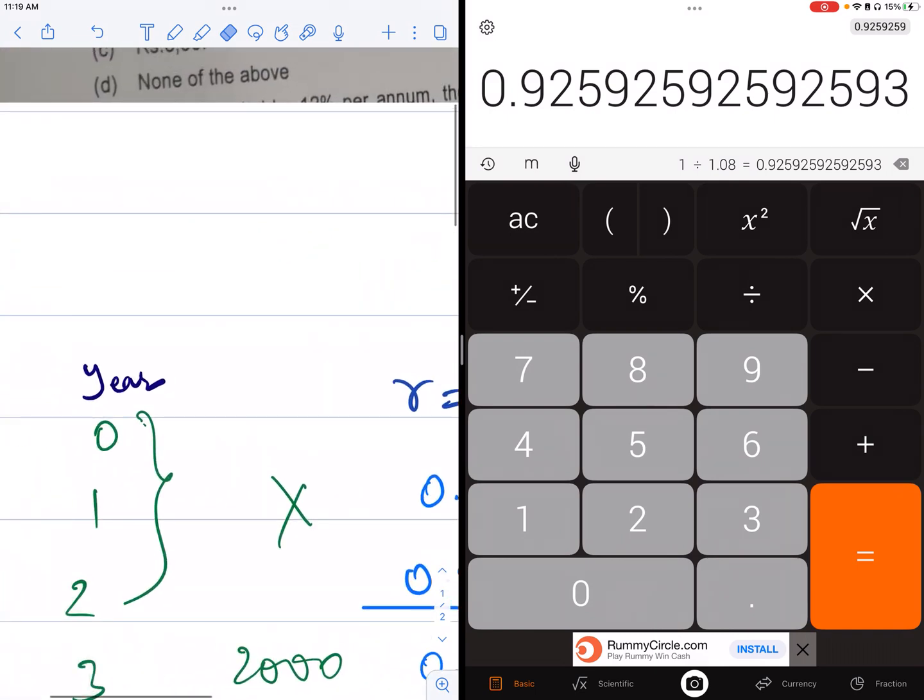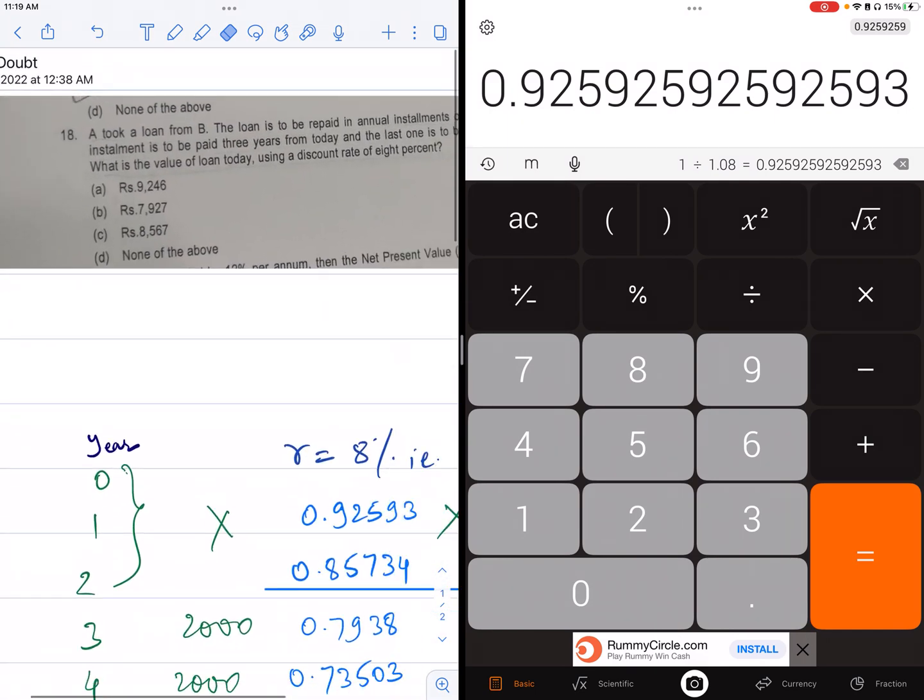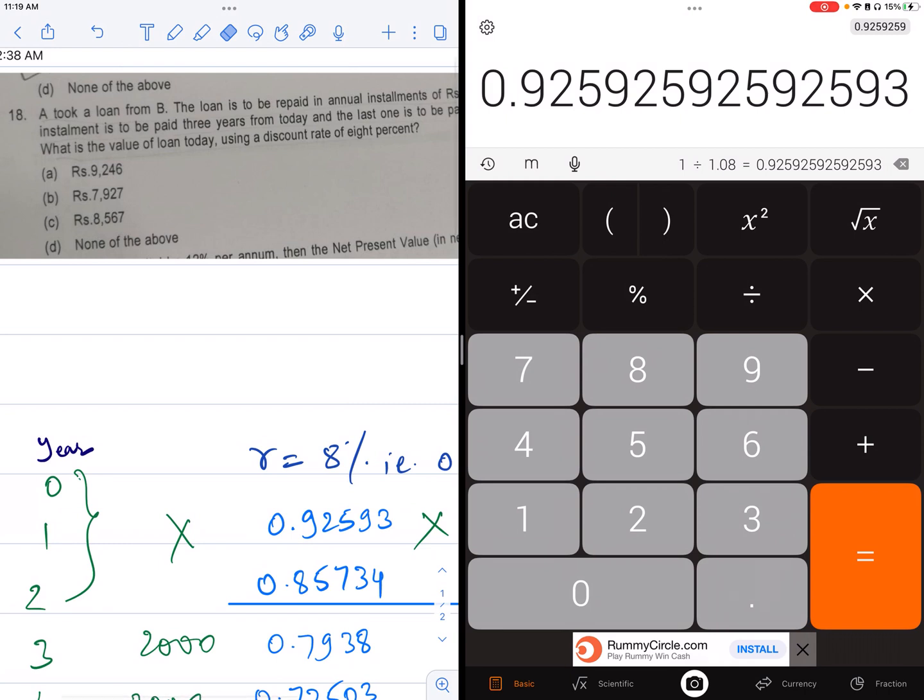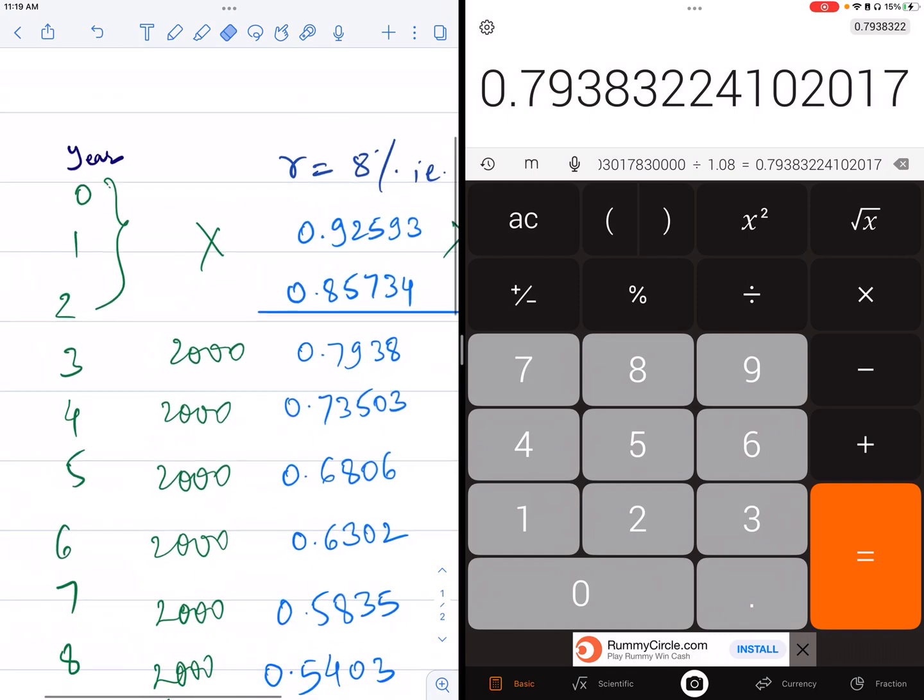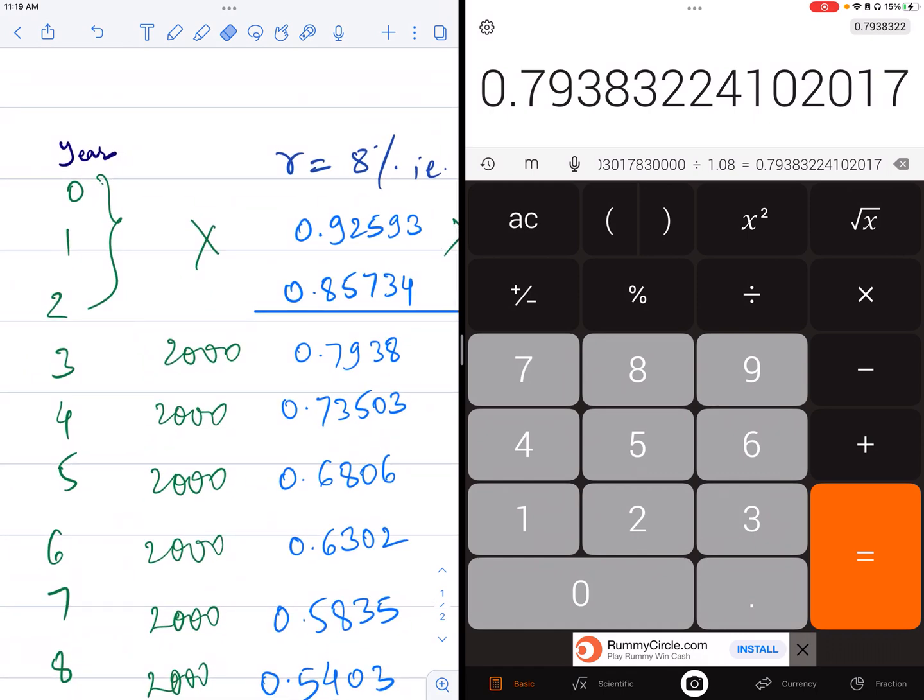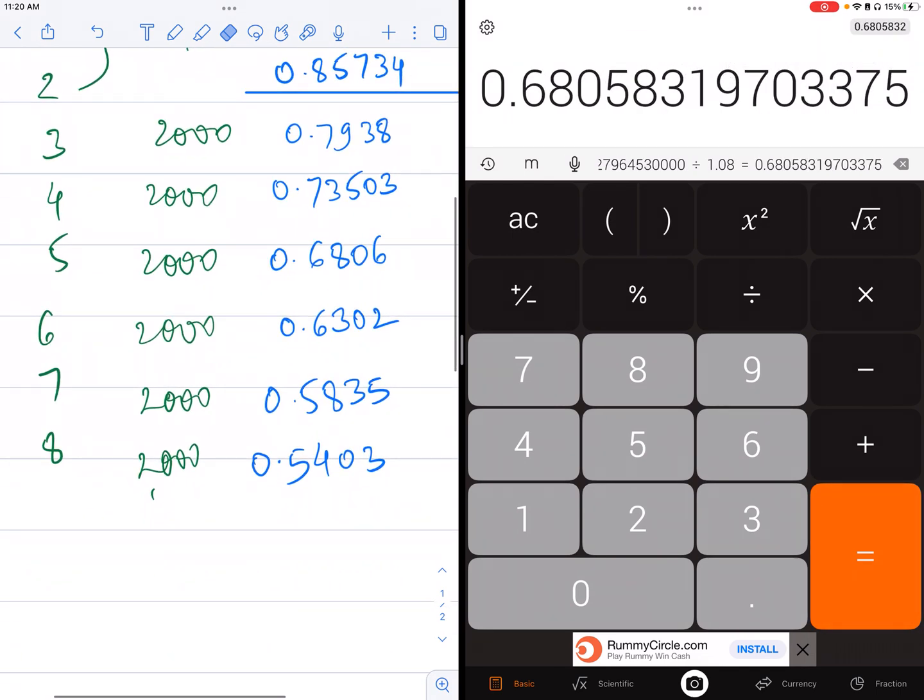If I discount it at the end of year number one, one divided by 1.08 at the end of year number one is 0.92593 something. If we square it, it becomes 0.8573 something. So you keep squaring and you will get the discounting rate or factor at the end of each year. After the third year, 0.7938 something, 0.735 something, 0.68 something, 0.6302, 0.5835 and 0.5403 something.